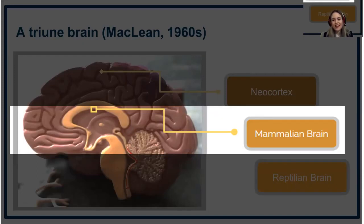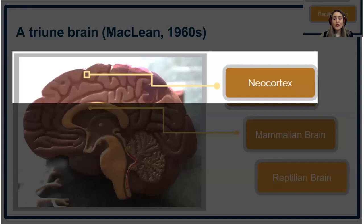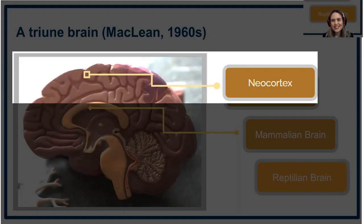Then we have the mammalian brain, also called the limbic system or the emotional brain, because this is where emotions happen — it's the center of emotions. And then the neocortex, which is the part that we as educators are most interested in engaging, because it is in charge of learning. That's where language acquisition occurs and where language is processed.